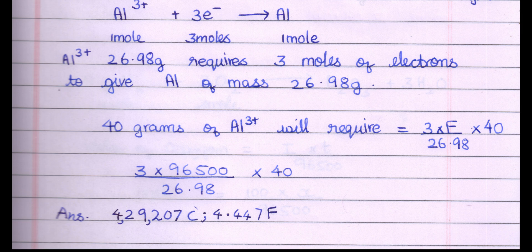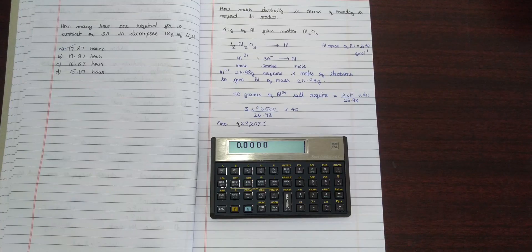1 gram of aluminum 3+ requires 0.1112 farads of electricity by the formula: number of electrons times Faraday constant divided by atomic mass equals the amount of electricity to displace the metal from solution. So 40 grams of aluminum 3+ requires 4.447 farads of electricity.